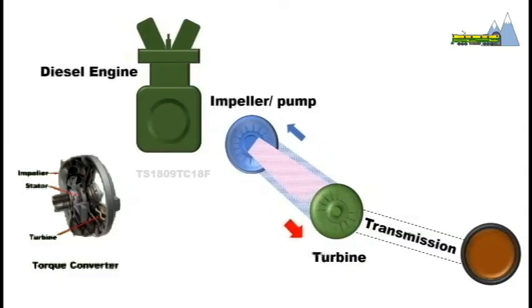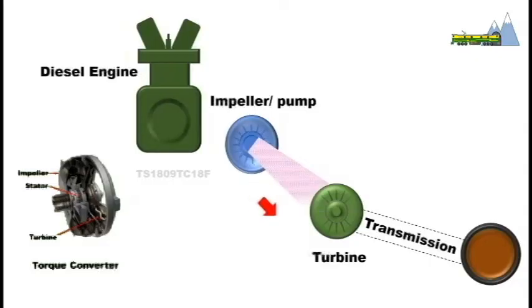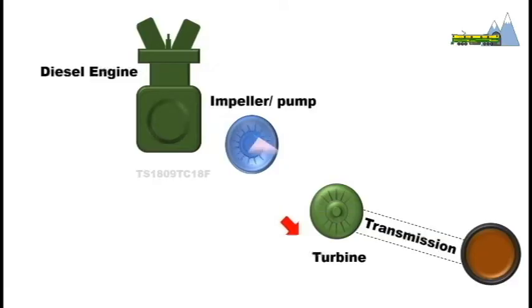When wheels are stopped by braking, the turbine also stops rotating but the impeller connected to the engine keeps moving and this prevents the killing of the engine.